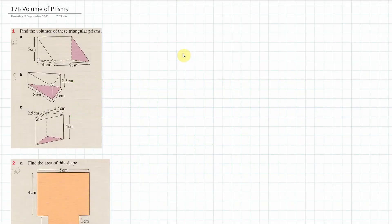Alright Unit 9s, we're looking at the volume of prisms today in Exercise 17b. I've selected some problems for you to do — you'll see those on Thinkwave. For number 1a, we're trying to find the volume of this triangular prism. What you want to do is find the purple area and then multiply it by the depth, which is 9.